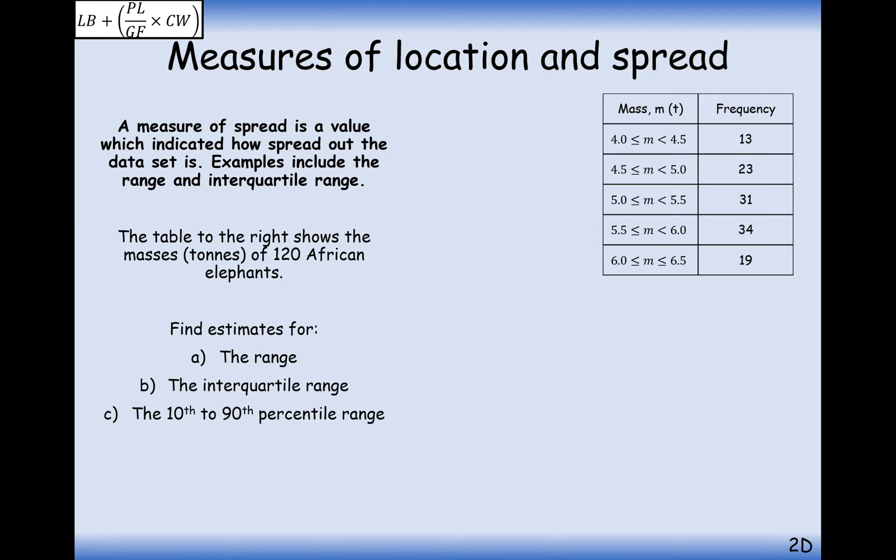So let's have a look at the range first. So the range is the easiest one, the minimum value it could be is 4, the maximum value it could be is 6.5. So 6.5 take away 4 equals 2.5. So 2.5 here is the range, it's not from 4 to 6.5, it's 2.5 is the range.